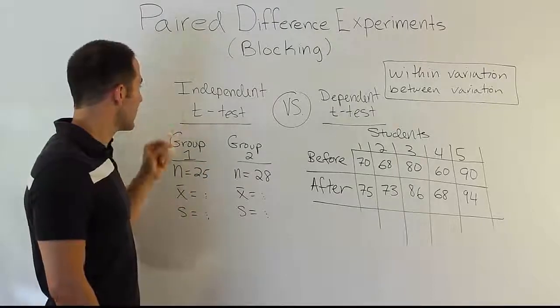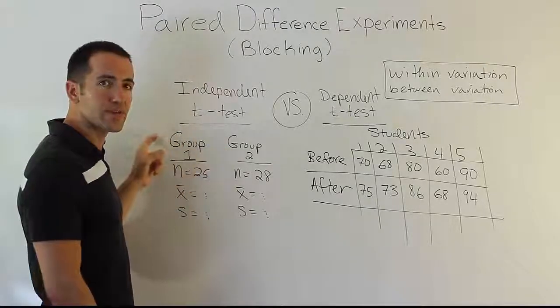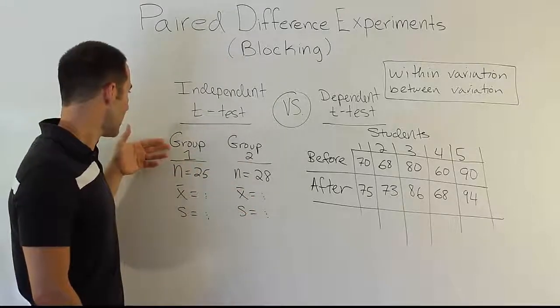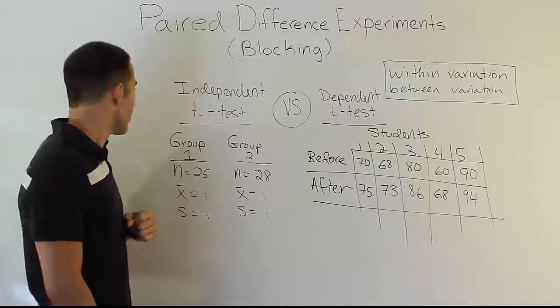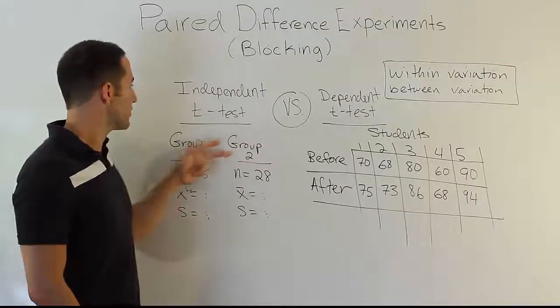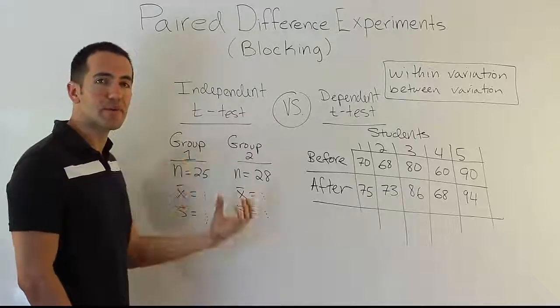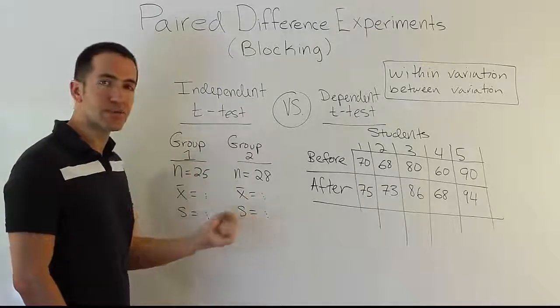In the independent t-test, we have two groups usually. And those two groups are independent groups, they're separate. So for example, group one might be males, group two might be females. It could be group one is math majors, group two is business majors. But they're independent groups. There's no direct connection between them.